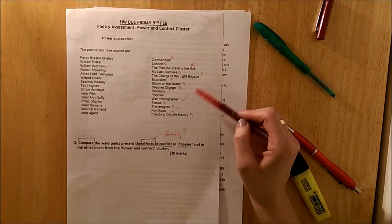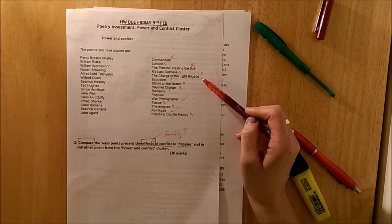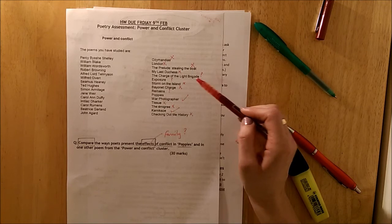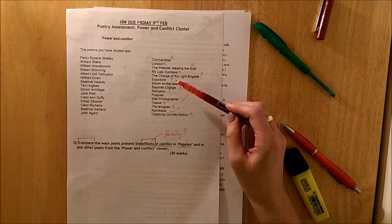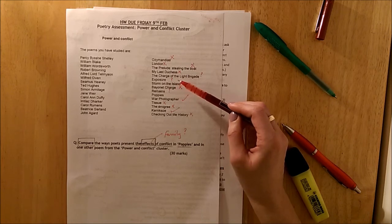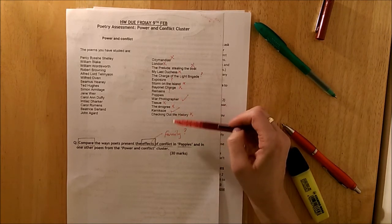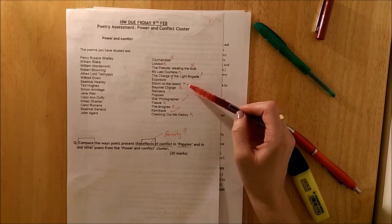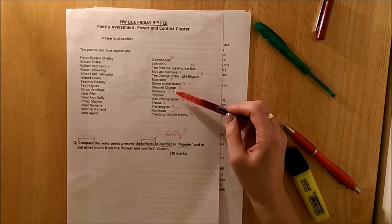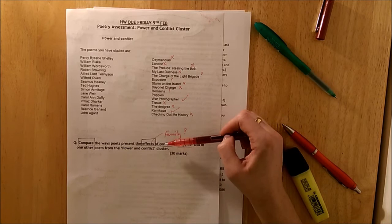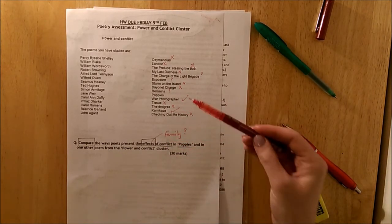Charge of the Light Brigade. Okay we've got the effect of conflict. Lots of people die. But I still don't think it's the best choice. Similar with Exposure. Effect of conflict. You've got loss of patriotism. Loss of religion. Loss of life. But it's still not the best comparison. Storm on the Island. Again based around conflict but not strong. Bayonet Charge. Similar. Remains could work well. You're looking at the effect of conflict when someone's come home. You're looking at PTSD.